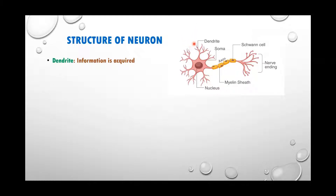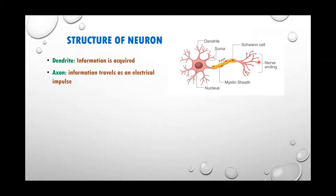These receptors get in the signal, and through the dendrite the signal enters the neuron, which sets off a chemical reaction converting it into an electrical impulse. This electrical impulse passes through the axon and ends at the nerve ending. Before another dendrite starts in the next neuron, we see a gap — that gap is called a synapse. Through the axon, information travels as an electrical impulse.